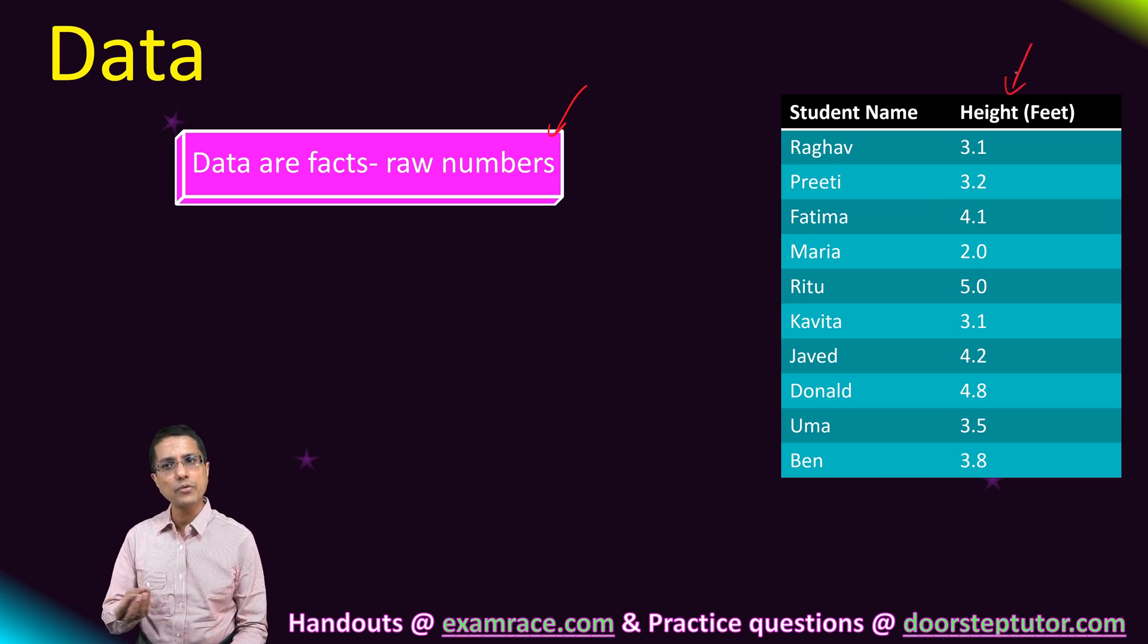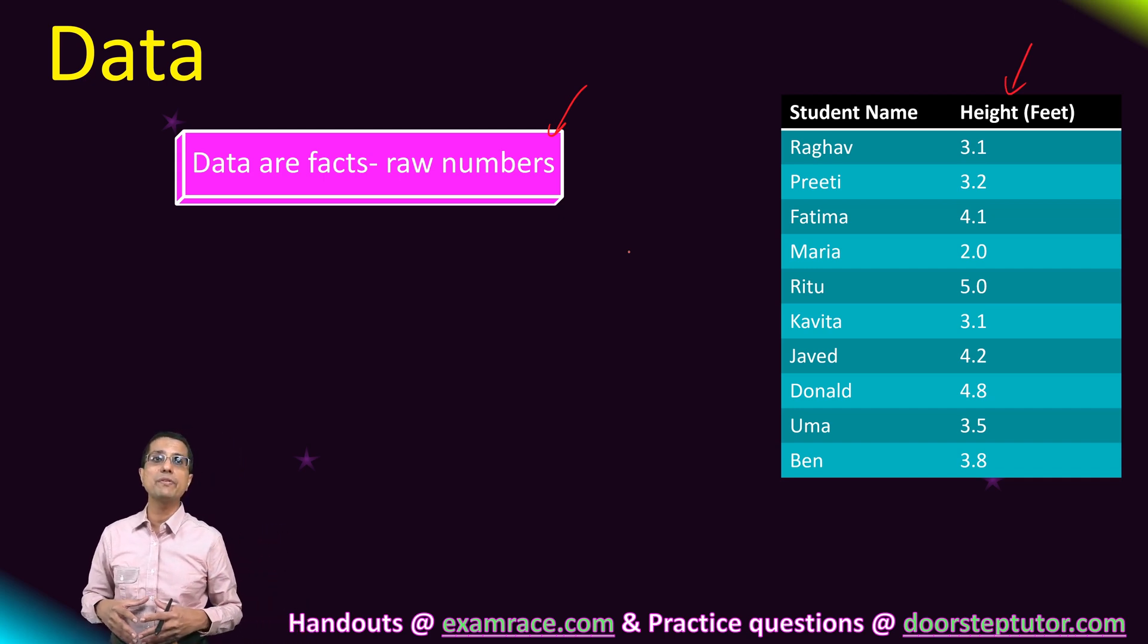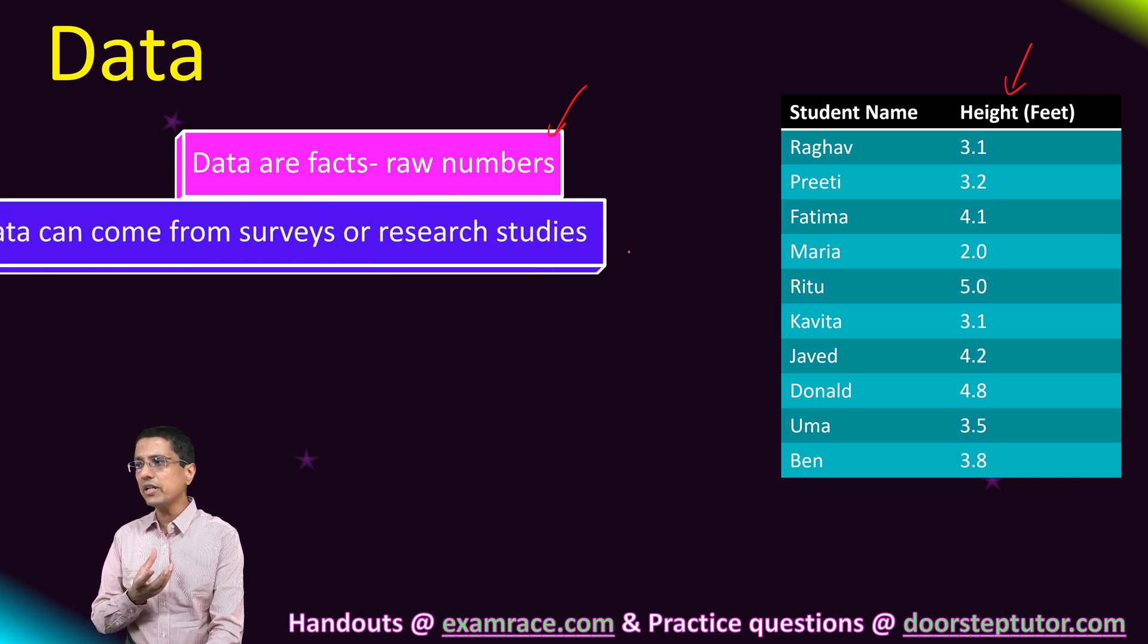Here we have some numeric data about the student's height. I might also have non-numeric data, for example student's preference of colors or their preference of particular brand of clothes. So those kinds of data are actually non-numeric.